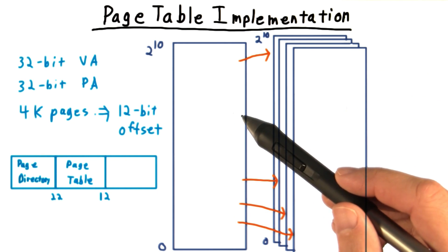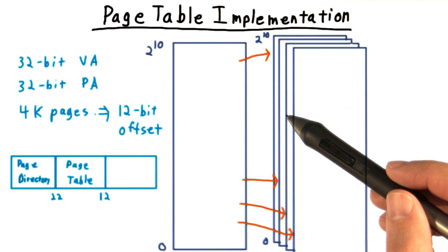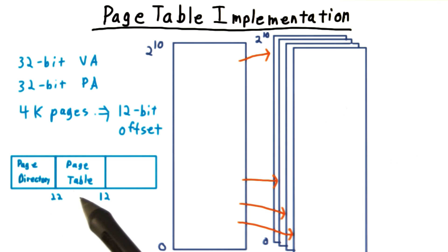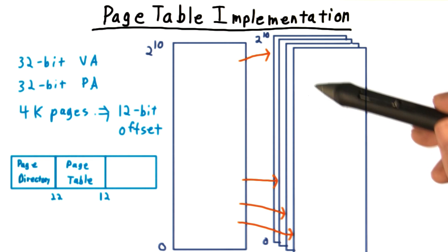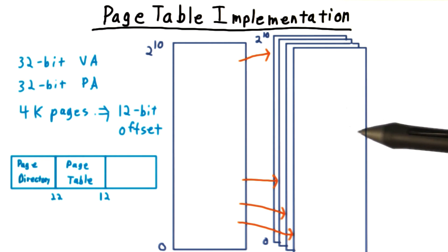We use the next 10 bits as the index into that lower-level page table. And the contents of that page table then give us the physical page number.